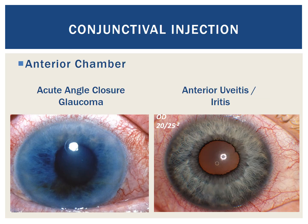The last anatomic area we will touch on for conjunctival injection is the anterior chamber. On the left, we can see acute angle closure glaucoma, which is the result of an increase in intraocular pressure due to a sudden closure of the anterior chamber angle by the adjacent iris. This increase in pressure causes pain, a fixed pupil, and conjunctival injection, and often occurs with ciliary flush. On the right is an example of anterior uveitis and iritis, due to inflammation of the iris and/or the ciliary body, and ciliary flush is often seen in this scenario as well.